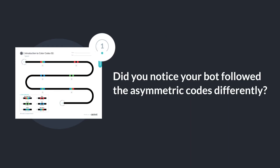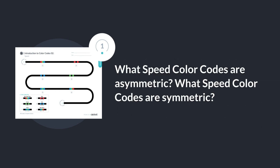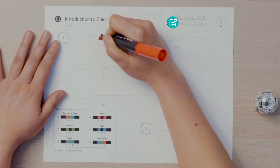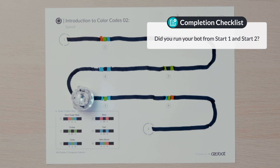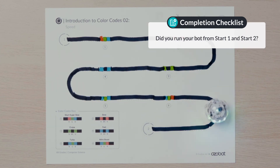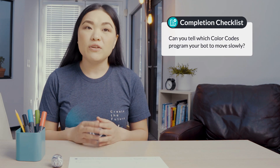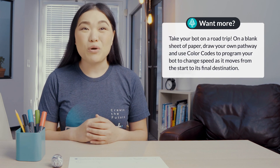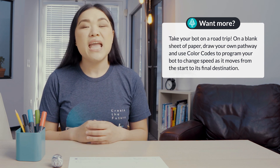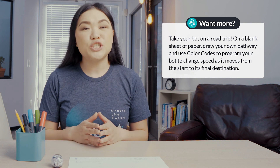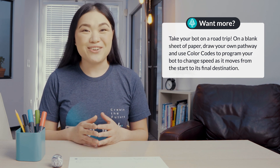Did you notice your bot followed the asymmetric codes differently? What speed color codes are asymmetric? What speed color codes are symmetric? Way to go programming your bot to change speed. Make sure your work is complete — did you fill in the missing color codes on the pathway? Did you run your bot from start one and start two? Can you tell how the speed of your bot changed as it moved along the pathway? Can you tell which color codes program your bot to move slowly or quickly? If you're looking for more to do, you can take your bot on a road trip. On a blank sheet of paper, draw your own pathway and use color codes to program your bot to change speed as it moves from the start to its final destination.